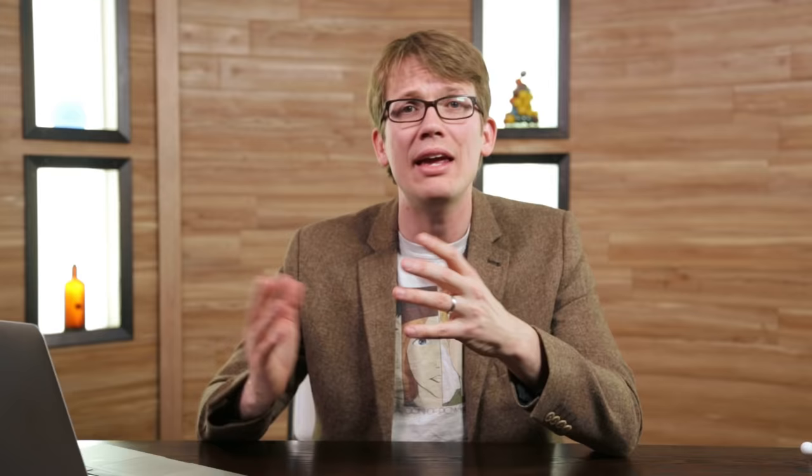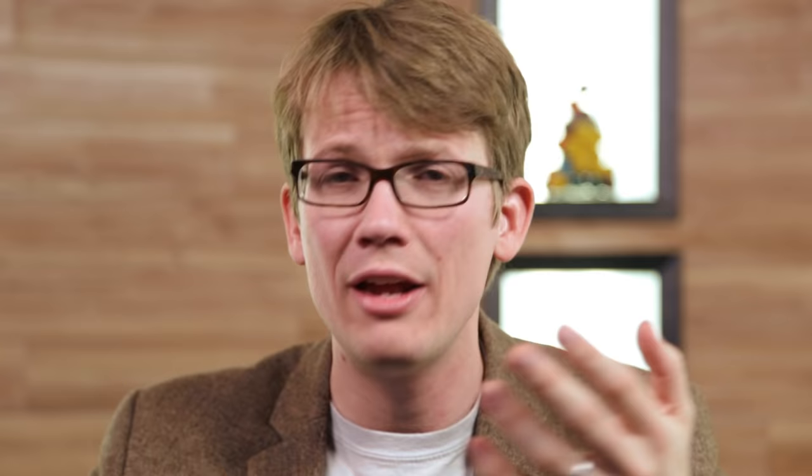Now, we only have two more oxygen-based functional groups we're going to talk about. These are groups that have internal oxygens bonded directly to carbons. When you see an O in the middle of a chain like this, it's either an ether or an ester. Ethers have just one oxygen all alone in the middle of the carbon chain. Esters, on the other hand, I focus on that S noise, making me think it must be plural, because they have two oxygens, one in the middle of the chain and one as part of a carbonyl. Esters are just like a ketone mixed with an ether.